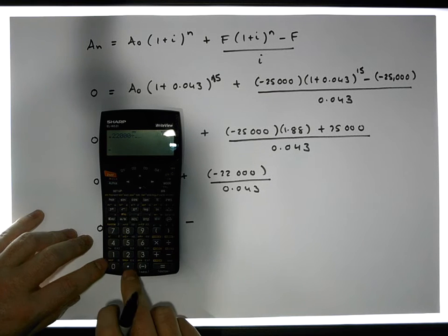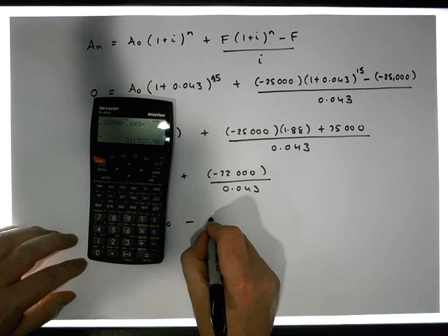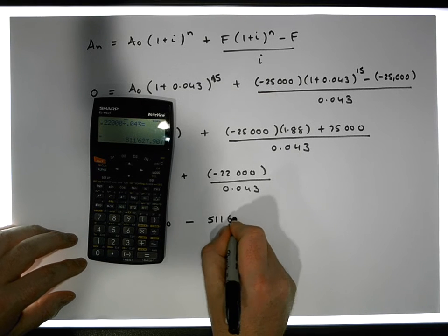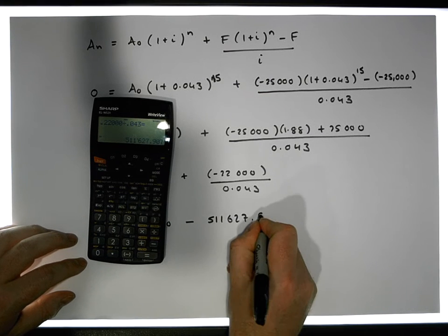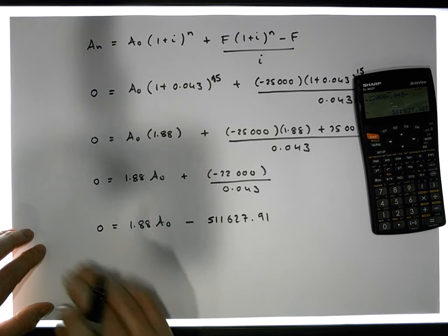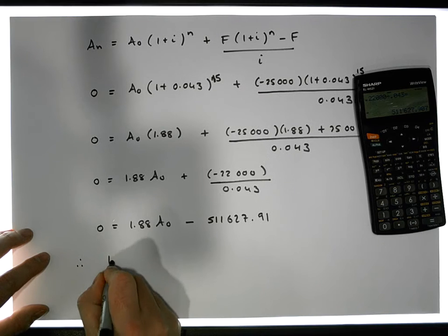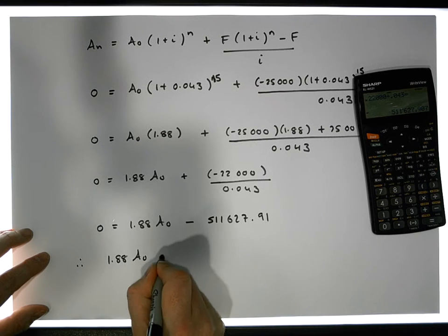This gives us a value of 511,627.91 to two decimal places. Now we bring the negative over, it becomes positive. So what we end up with is therefore we have 1.88 A0 must be equal to 511,627.91.